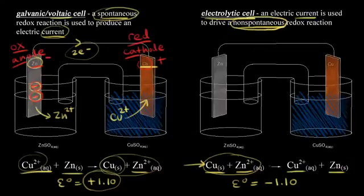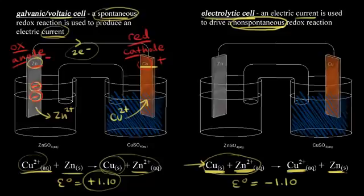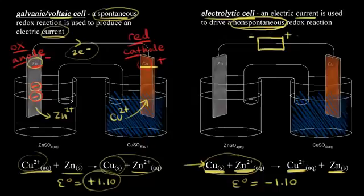A negative value for your cell potential means a non-spontaneous redox reaction, so this doesn't occur on its own. Solid copper doesn't just turn into copper two plus, and zinc two plus doesn't turn into solid zinc — it needs help. It needs an external voltage source, like a battery, to drive this reaction and force it to happen. We need at least 1.10 volts to force this reaction to occur — and in practice, it turns out to be more than 1.10 volts.